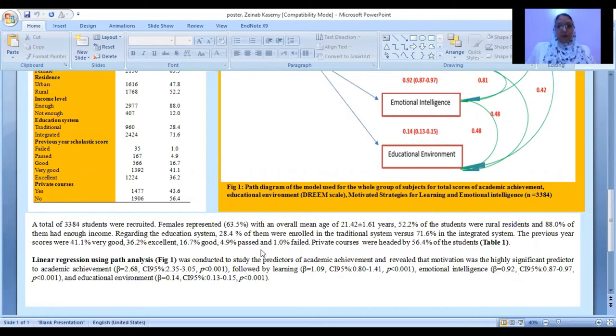Rural residency represented 52.2%, and 88% of the students had enough income. Regarding the education system, 28.4% of them were enrolled in the traditional system versus 71.6% in the integrated one.